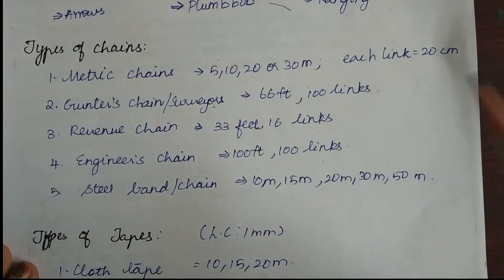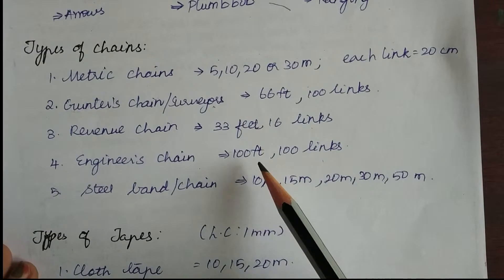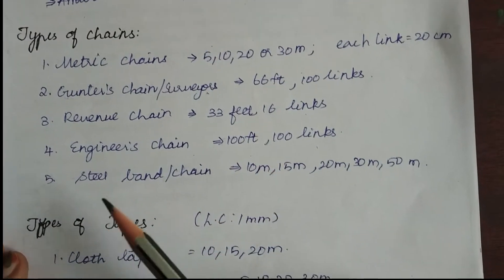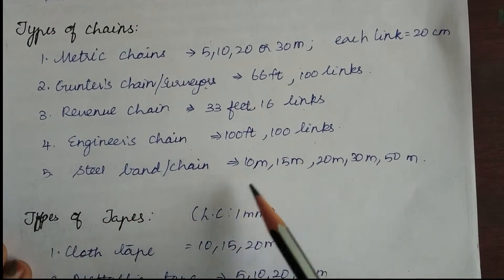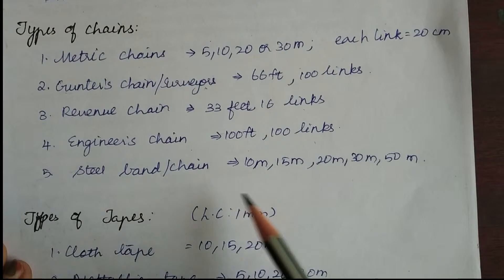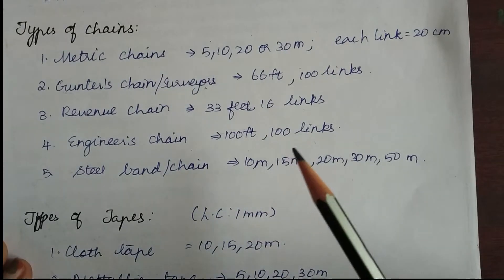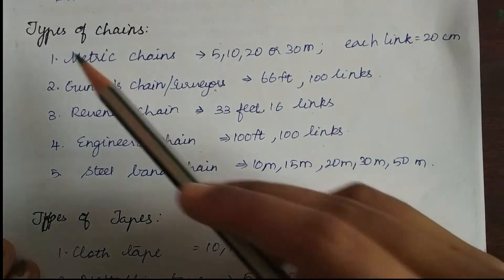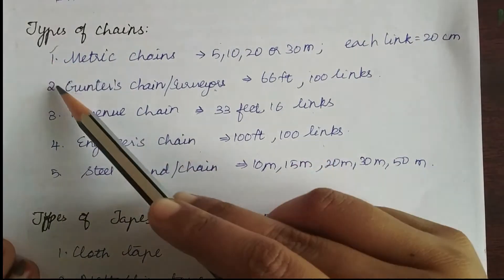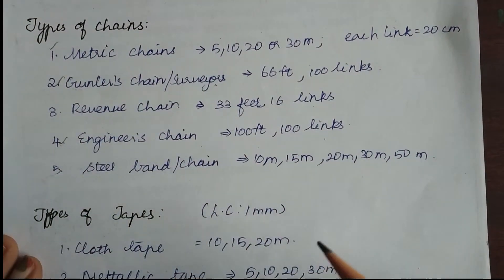Next is the engineer's chain, which is 100 feet long with 100 links, meaning each link is one foot long. Next is the steel band or chain, which is also available in many sizes. Among these five types, metric chains, surveyor's chain, and engineer's chains are used most widely.